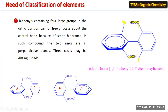This type of isomerism arises due to restricted rotation across the carbon-carbon single bond, and this particular isomerism is known as atropisomerism. The isomers are called atropisomers. The optical activity of biphenyl depends on the size of the substituent at the ortho position.